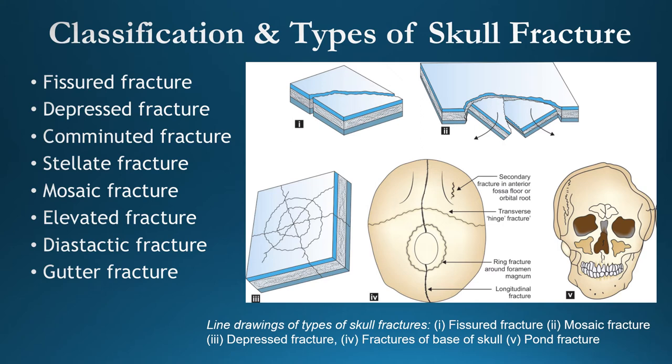When comminuted fracture fragments are not displaced, they give a stellar appearance. It usually occurs as a complication of depressed fracture, but is more complex. Stellate fracture is a comminuted fracture with fracture fragments radiating from the center, held intact; causes are the same as comminuted fracture. Mosaic fracture is a non-depressed comminuted fracture where the fractured site appears as several fissures forming a spider-web, cobweb, or mosaic pattern, with minimal or absent depression.